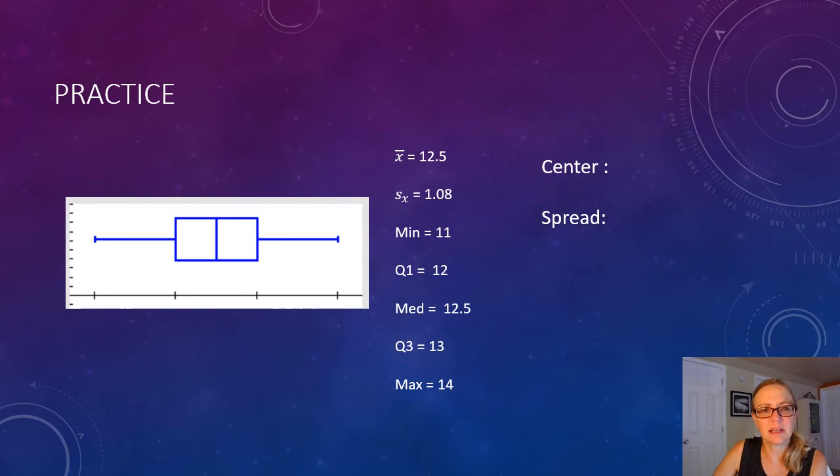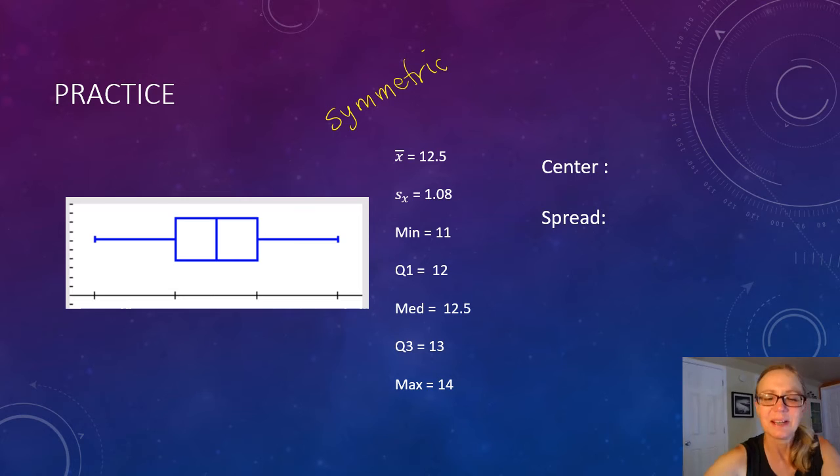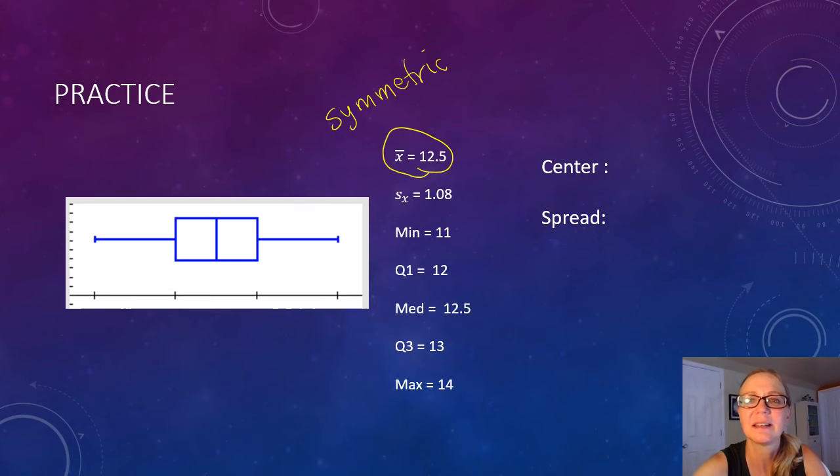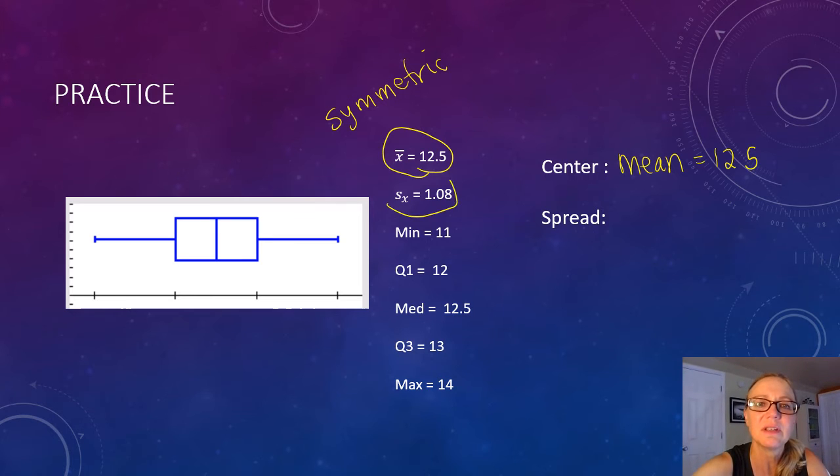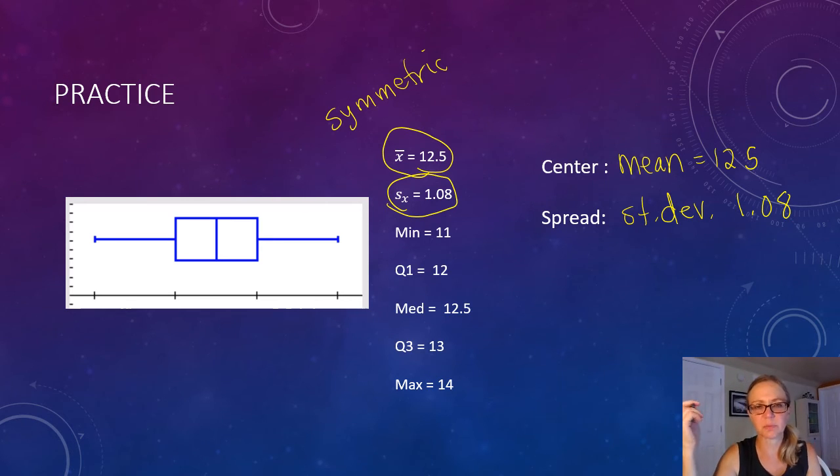This box plot, see how evenly distributed everything is? This box plot represents a set of data which is symmetric. When the data is symmetric, you want to use the mean, which is 12.5, and the standard deviation, which is 1.08, in order to measure center and spread. Again, that's because the data is symmetric.